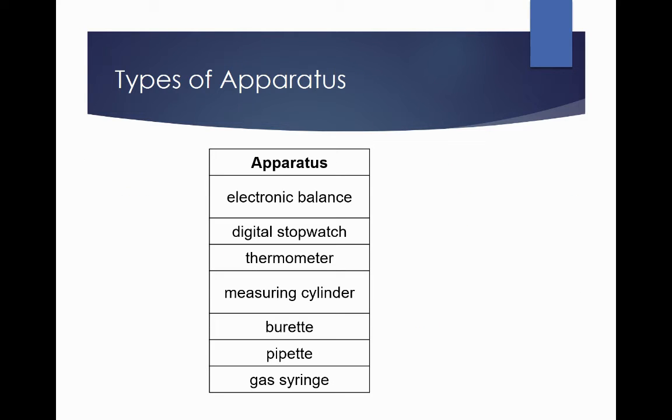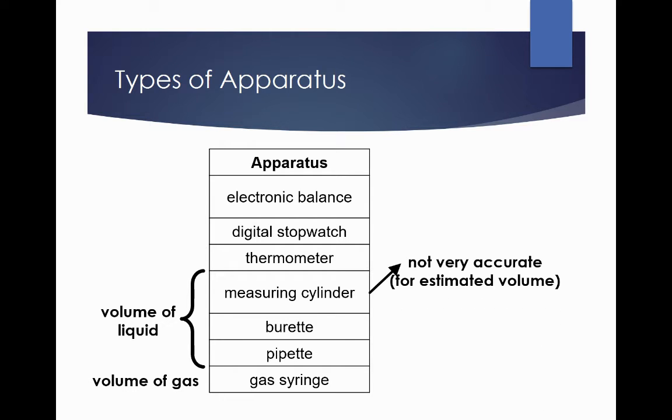For apparatus, we have many of them and we will normally use a few for liquids, especially the measuring cylinder, burette, as well as the pipette. Gas syringe is reserved for measuring the volume of gas. Now the measuring cylinder is not a very accurate piece of apparatus and therefore we use it for estimated volumes only.